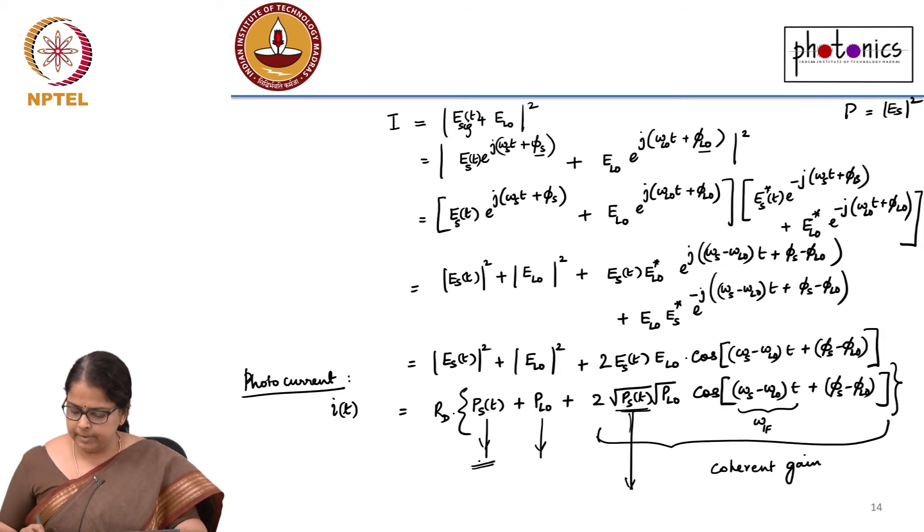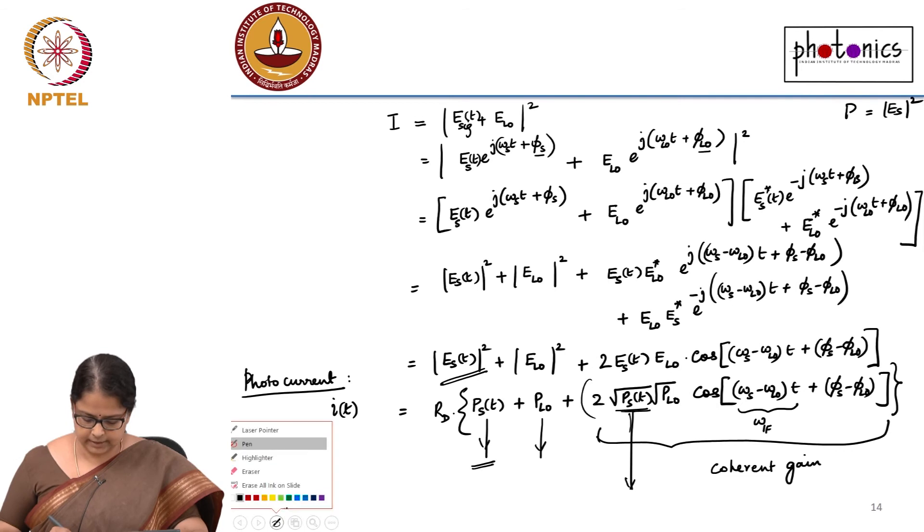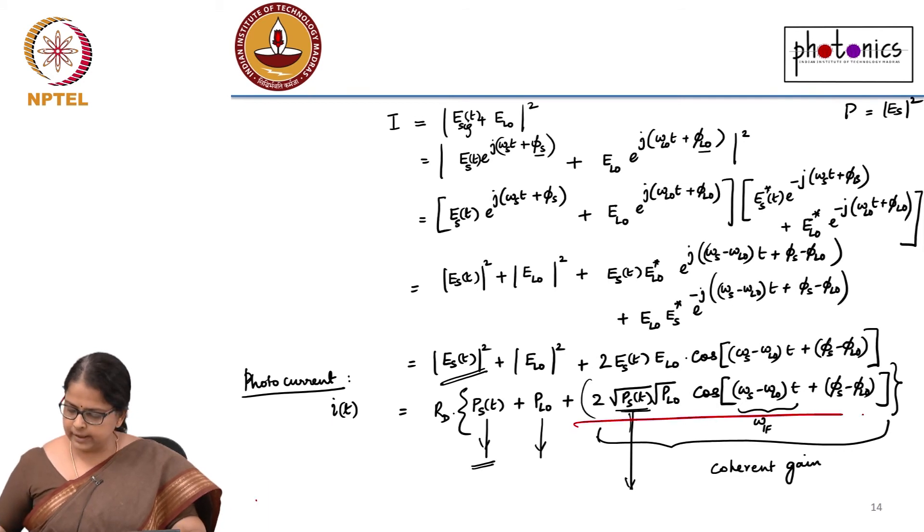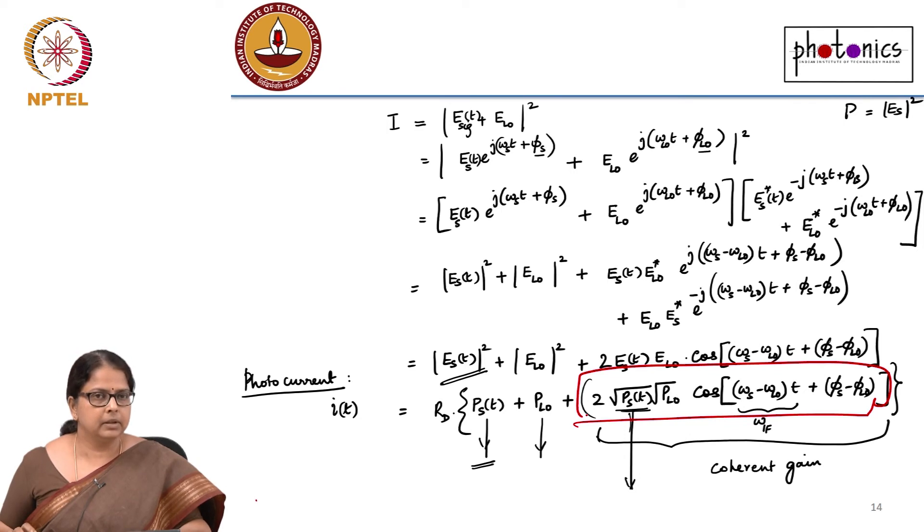Is this term going to be a DC or AC? Will I get a signal here? I have taken the average, I have done the mod square, so my signal is lost. My signal is contained only here. It is only this term I can use to extract my signal. These are all DC terms and this is the AC term.